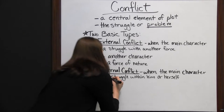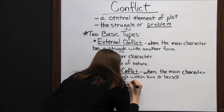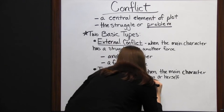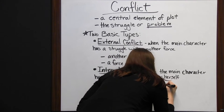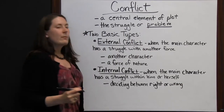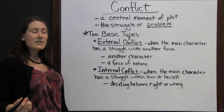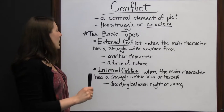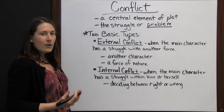An example of internal conflict would be deciding between right and wrong. Other people can tell you this is right or this is wrong. One person may say it's alright to steal a loaf of bread if you're hungry and have no money. Someone else may tell you it's wrong to do that because it's still stealing. It's an internal conflict within that character when they have to decide for themselves if something is right or wrong.